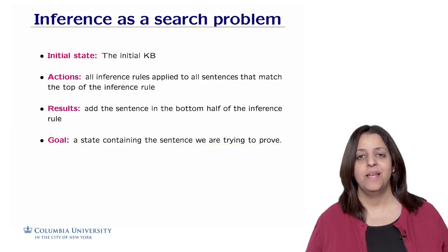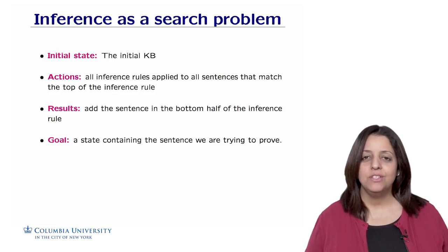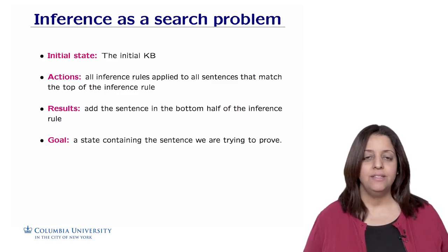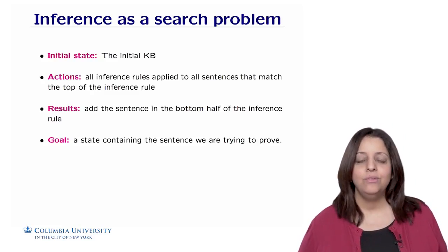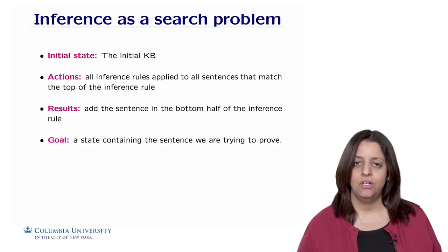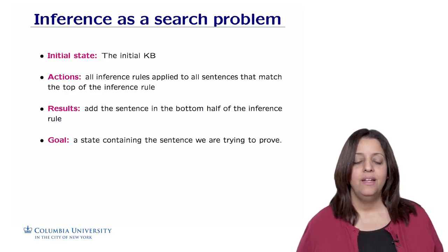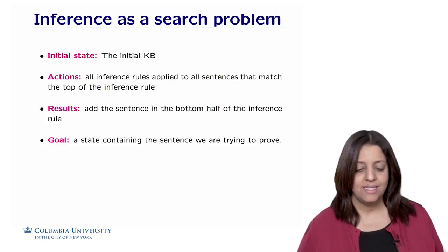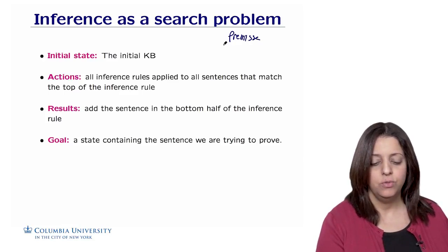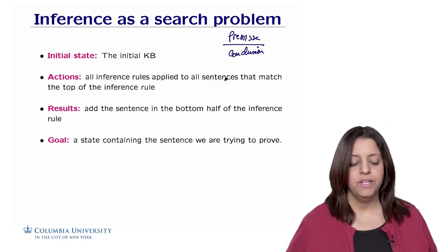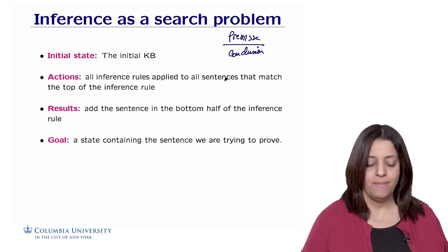You might have noticed something from the previous example, which is that inference sounds like search. I'm searching for what rules to apply, what inference to do to achieve some goal, which is to prove entailments between the knowledge base and the proposition. It's possible to cast the problem of inference as a search problem and use any of the algorithms we have seen in the previous weeks. The way to formalize that is to use an initial state in which we use the knowledge base. The action would be all the inference rules applied to all sentences that match the top of the inference rule, which is called the premise.